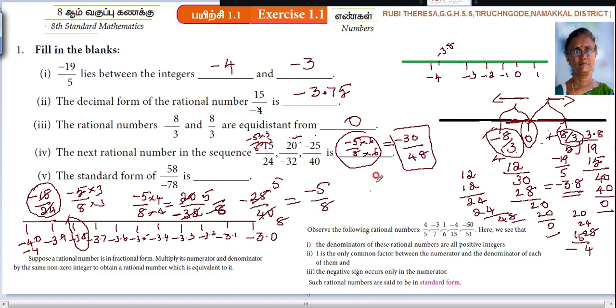So 58 divided by 78. That means minus. The negative sign occurs only in the numerator. So minus. In 2 table let us cancel. 2 twos are 4, remainder 1, 18. 9 twos are 18. Divided by 78. 3 twos are 6, remainder 1, 18. 9. So where you have to put minus? In the numerator. So minus 29 by 39. This is the answer.